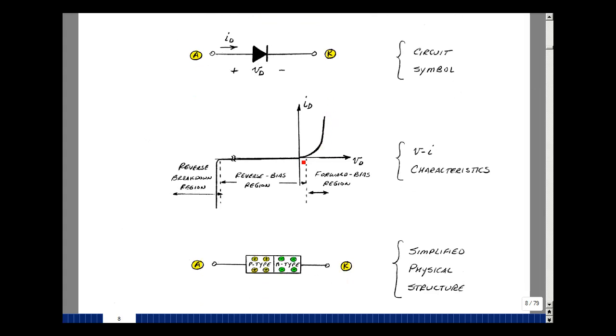And then as the voltage goes negative, the current is very small. And eventually, we get what's called breakdown, where the diode conducts again.